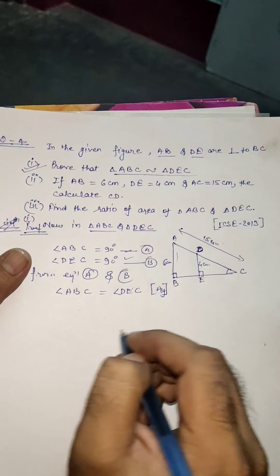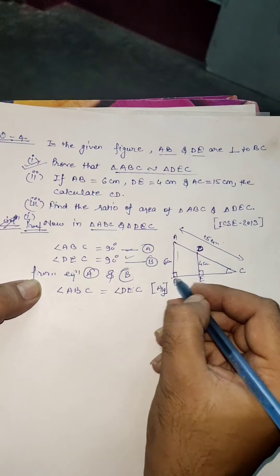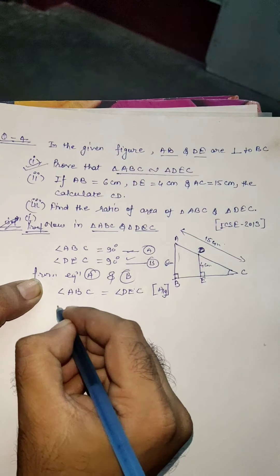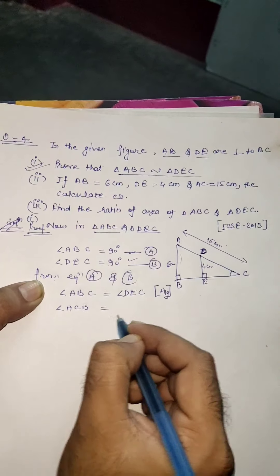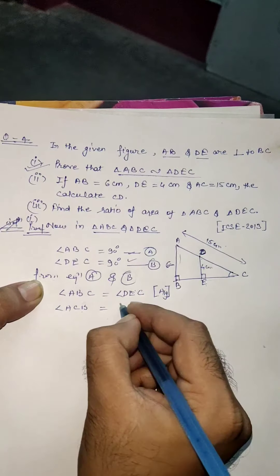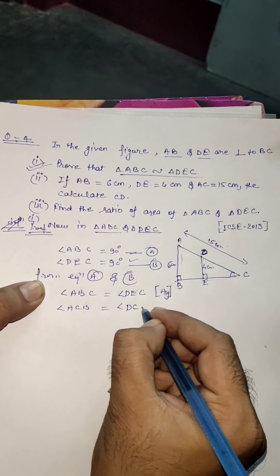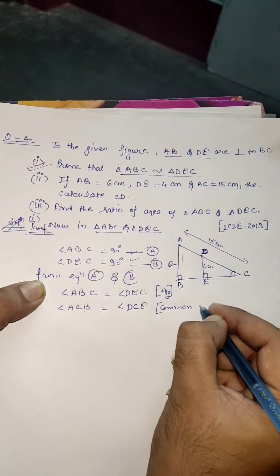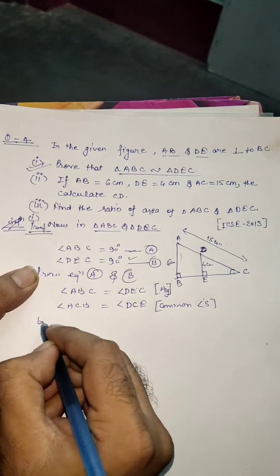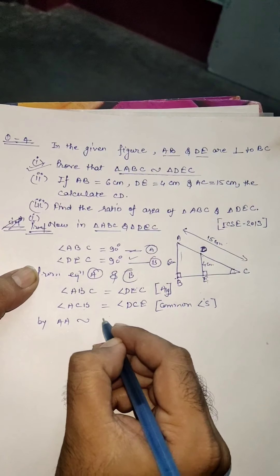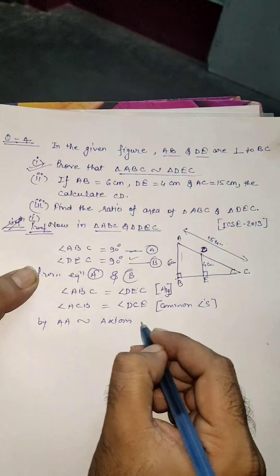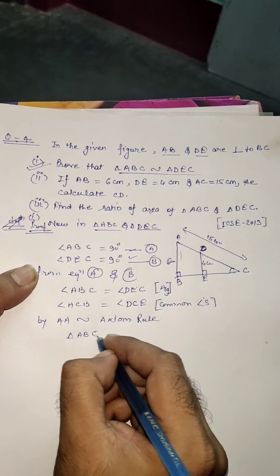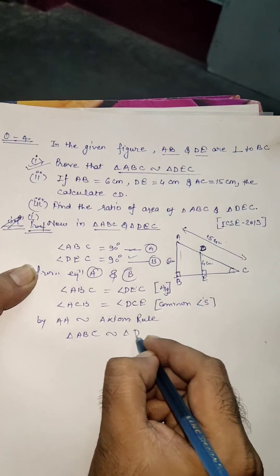These two angles are equal as they are both right angles. Now, for both triangles, angle ACB equals angle DCE — this is because they are common angles. Therefore, by the Angle-Angle (AA) similarity rule, triangle ABC is similar to triangle DEC.